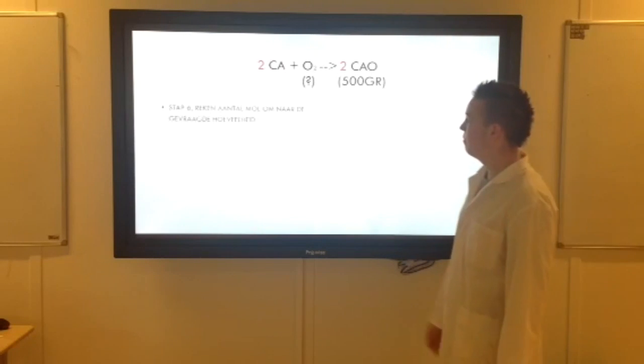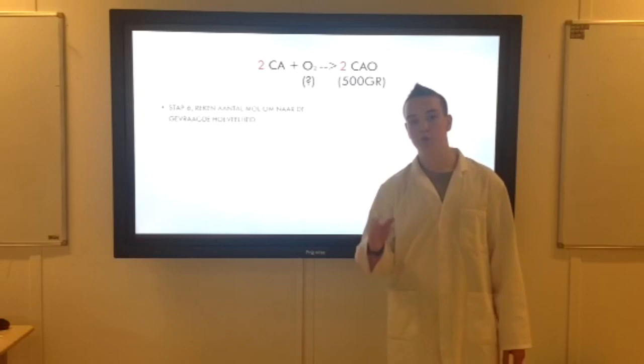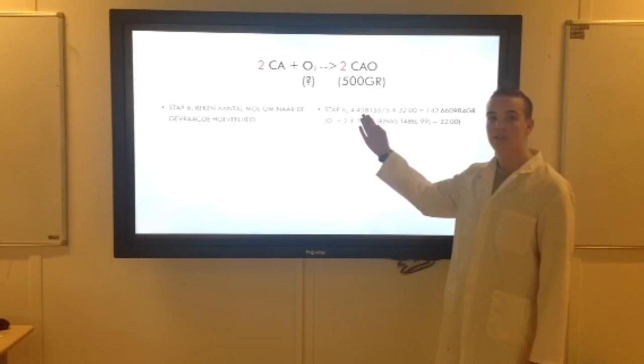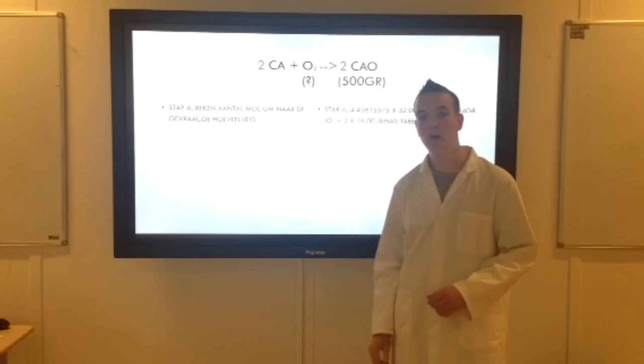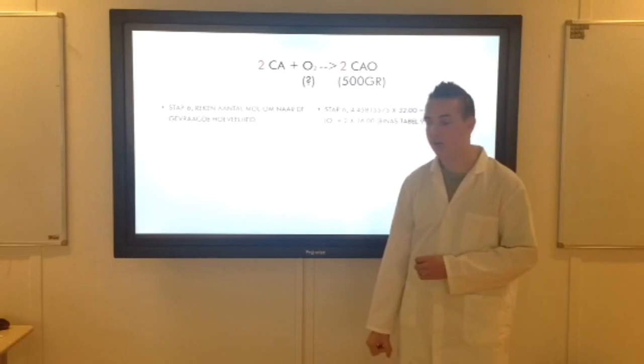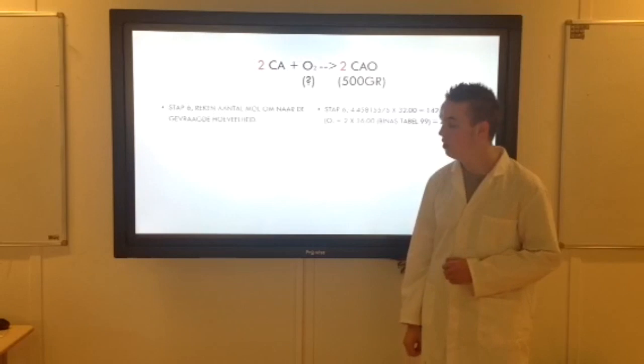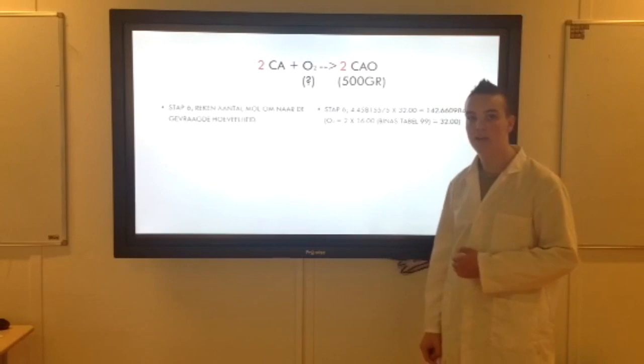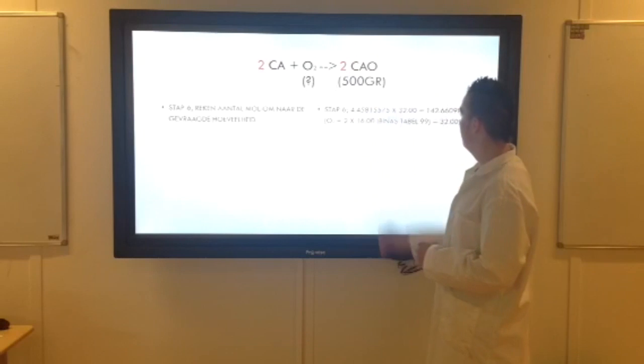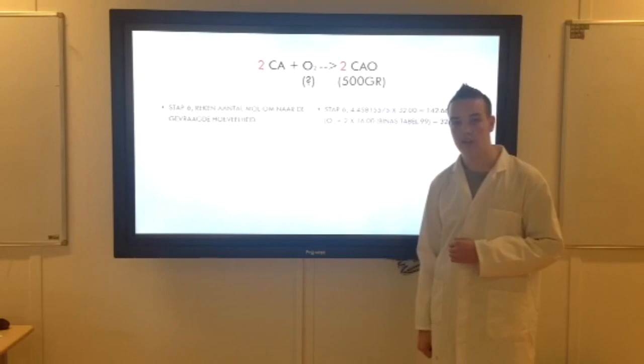Dan hebben we stap 6. Dan gaan we het weer omrekenen. Want we weten nu hoeveel mol we hebben. Want dat is altijd de stof waarmee je rekent. Maar we willen weten hoeveel zuurstof we hebben in gram. Dit is wat we net hebben uitgerekend. En als je van massa naar mol gaat, dan deel je het door de molaire massa. Maar we gaan nu van mol naar massa. En dan gaan we dat mooi even verkeerd doen. Dit is natuurlijk niet hetzelfde getal. Want we gaan nu kijken naar het zuurstof. Dus kijken we naar wat is de molaire massa van zuurstof. O2, dat betekent 2 keer een O. En O is 16,00. Dus hebben we keer 2 gedaan. Dat is 32,00. En dan doen we wat we net hebben uitgerekend. Doen we keer dat getal.